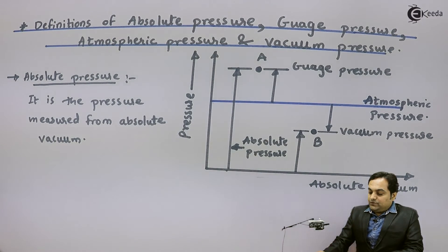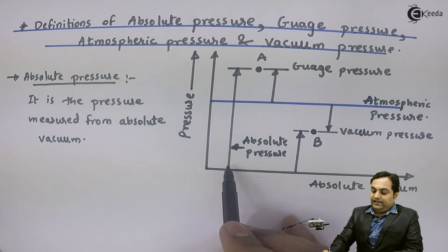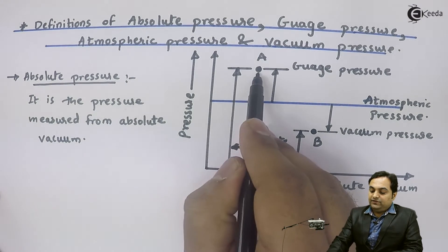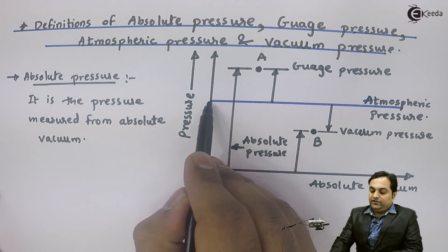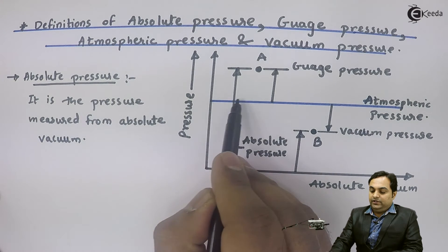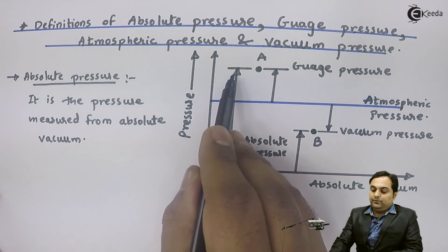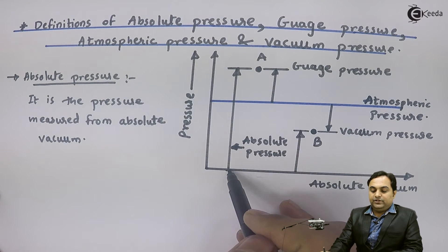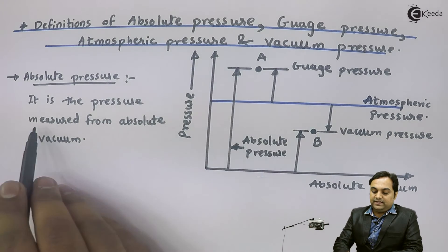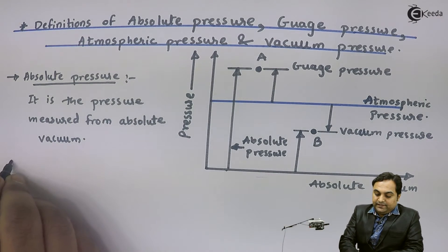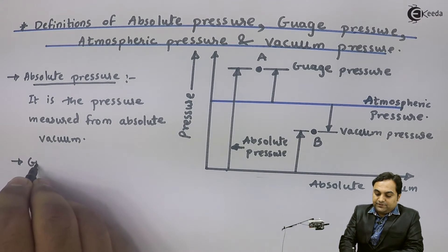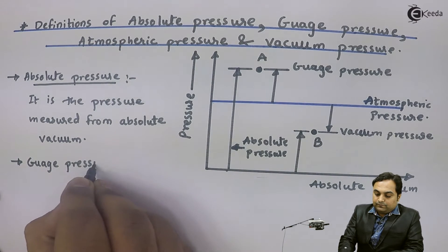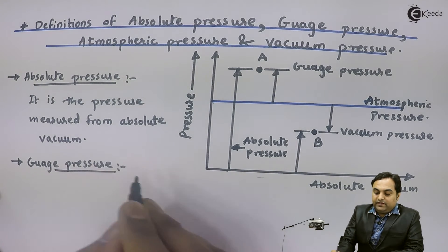Absolute vacuum means zero — the pressure value is zero. From that, if we are measuring the pressure up to a value above atmospheric, as we can see the atmospheric pressure is indicated by the blue line, so if the pressure goes above the blue line it is above atmospheric, and measuring with respect to absolute vacuum is called absolute pressure.